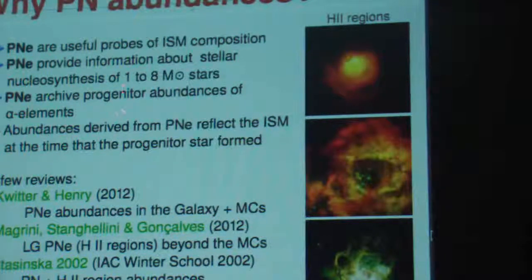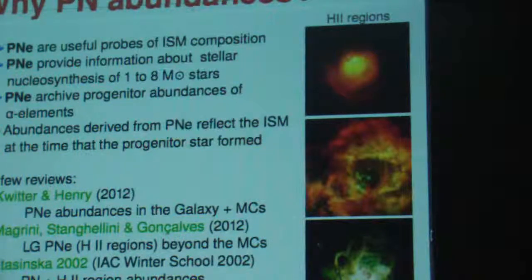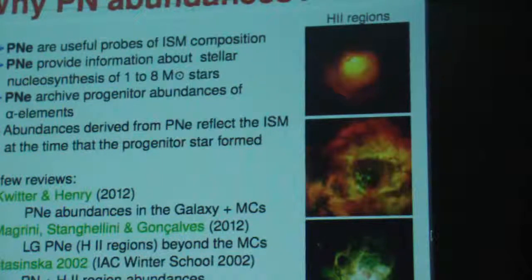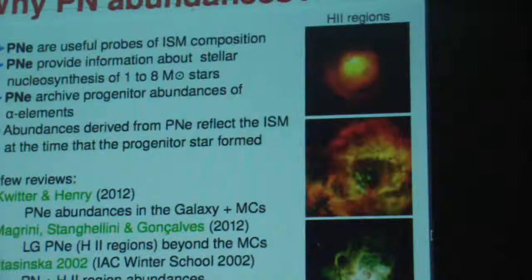If you set aside carbon and nitrogen and all these elements that are altered by stellar evolution, the other elements reflect the progenitor abundance — the composition of the ISM when the progenitors were born. And if you compare the abundance you get from planetary nebulae with those from HII regions, you can constrain very well the chemical evolution of the galaxy.